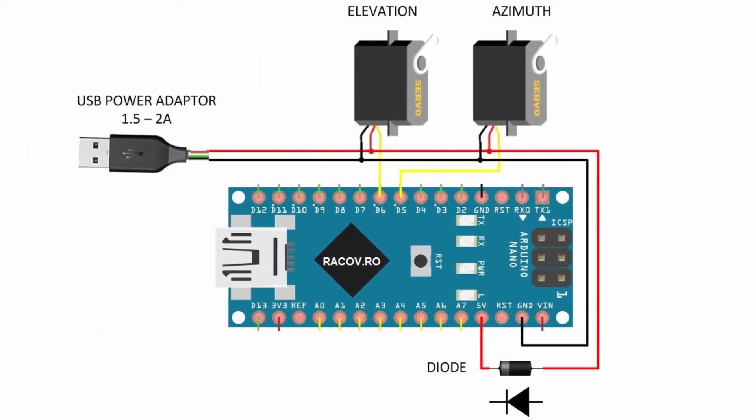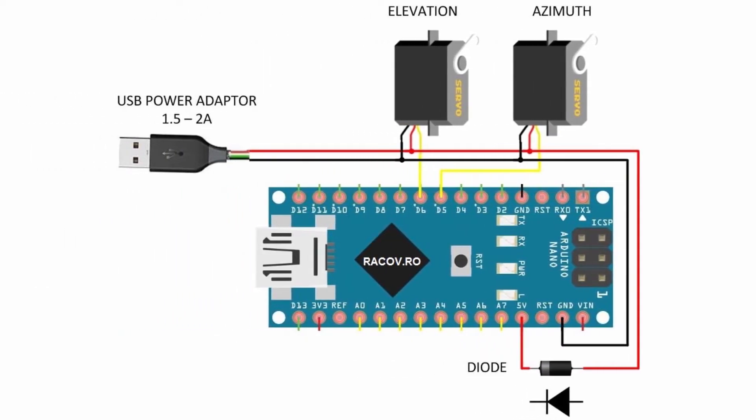The electric diagram is very simple and I chose to use an external USB power supply to power the servos because the computer USB doesn't have enough current to do this. The diode separates the voltages from the computer USB and external supply.